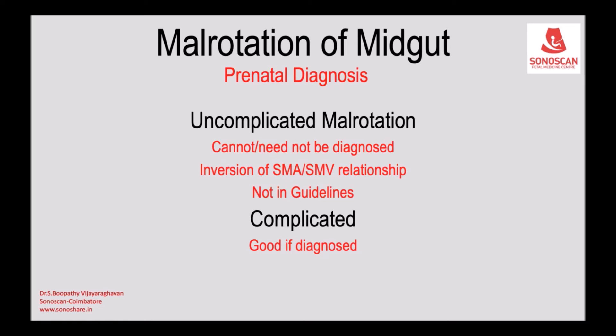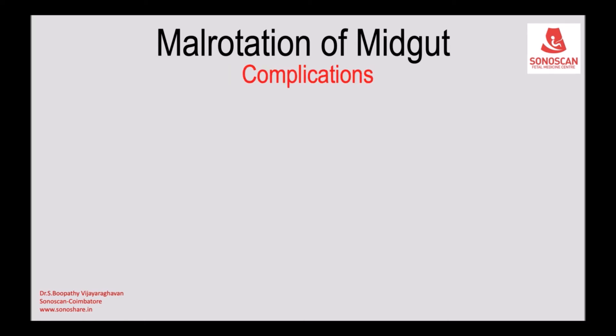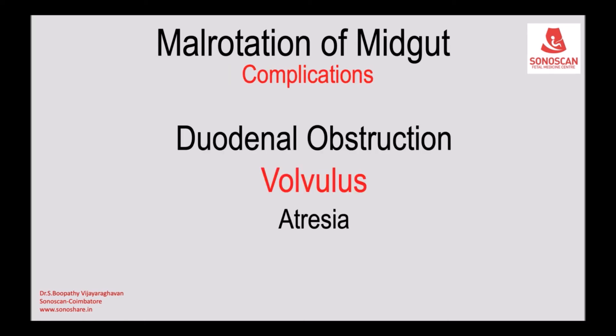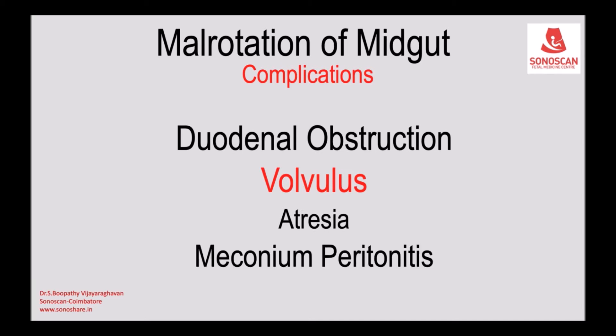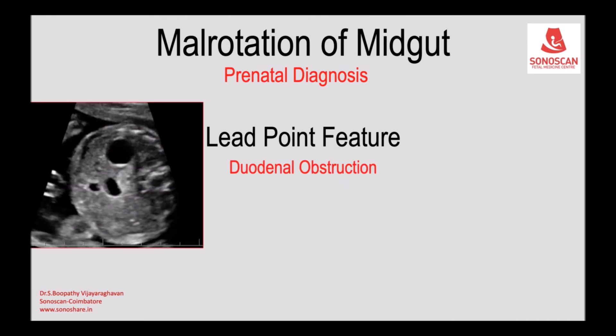It is good if diagnosed prenatally because the surgeon will be prepared. Malrotation can lead to ischemia and atresia of the bowel, or perforation leading to meconium peritonitis in the fetus. Another presentation is duodenal obstruction, which may lead to the diagnosis of malrotation.